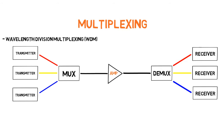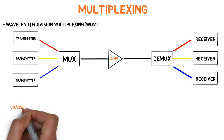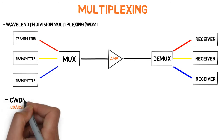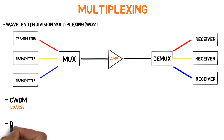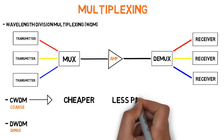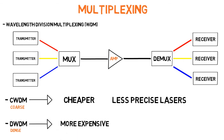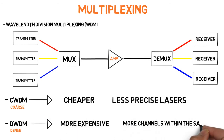There are many different types of Wavelength Division Multiplexers, but the two most common are coarse, or CWDM, and dense, or DWDM. The two are similar, but differ in the range of the optical spectrum they cover as well as the spacing between the channels in this range. In general, CWDM is cheaper but uses less precise lasers, and the channels are more spaced out. DWDM is more expensive but allows for many more channels within the same fiber.